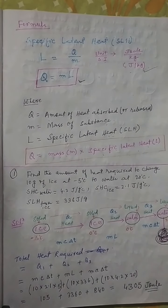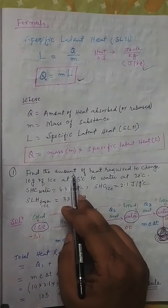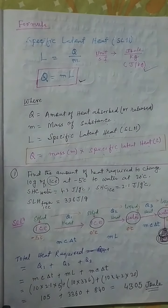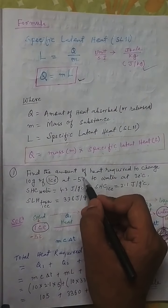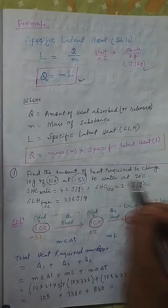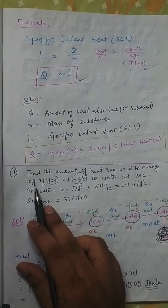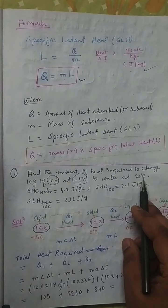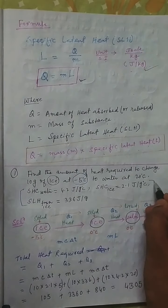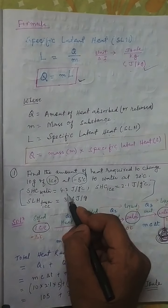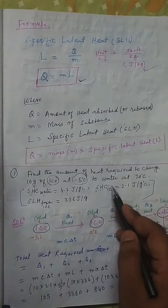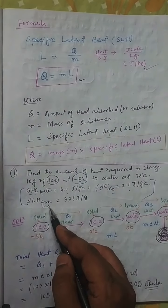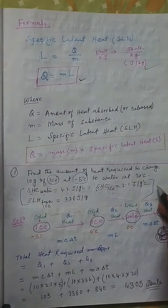Now look at question number 1: Find the amount of heat required to change 10 grams of ice at minus 5 degrees centigrade to water at 20 degrees centigrade. Given: specific heat capacity of water is 4.2, specific heat capacity of ice is 2.1, and specific latent heat of fusion of ice is 336 joules per gram.